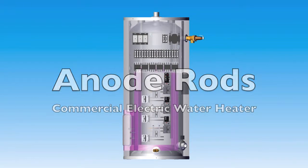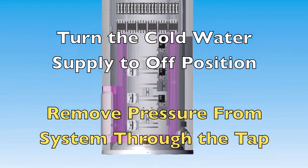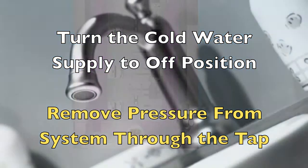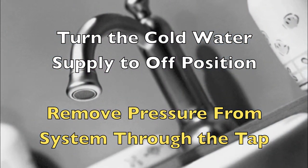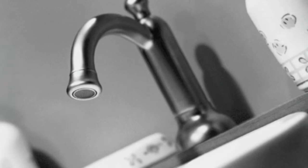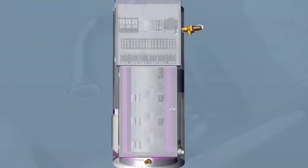Anode rod. It is very important to turn cold water supply to the off position and remove pressure from system either through the drain located on the cold inlet or through a domestic tap before anode rods can be removed.